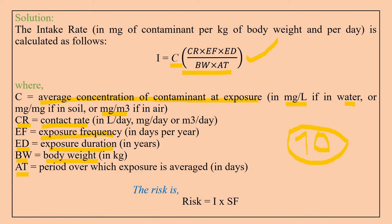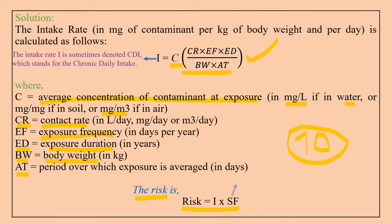The other formula is: Risk = CDI × SF, where CDI is the chronic daily intake and SF is the slope factor. The slope factor, or potency factor, is the slope of the dose-response curve.